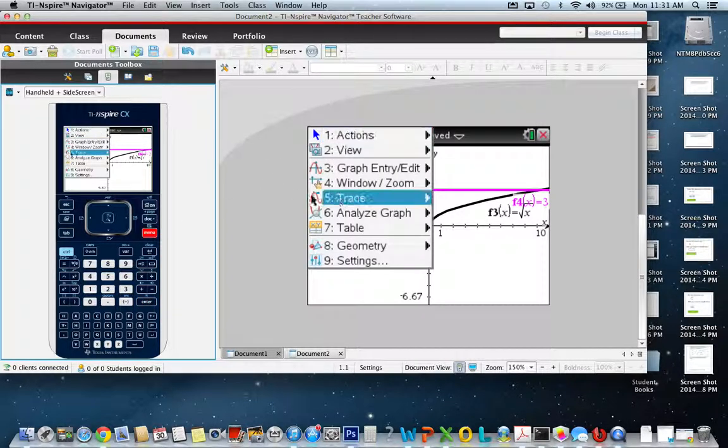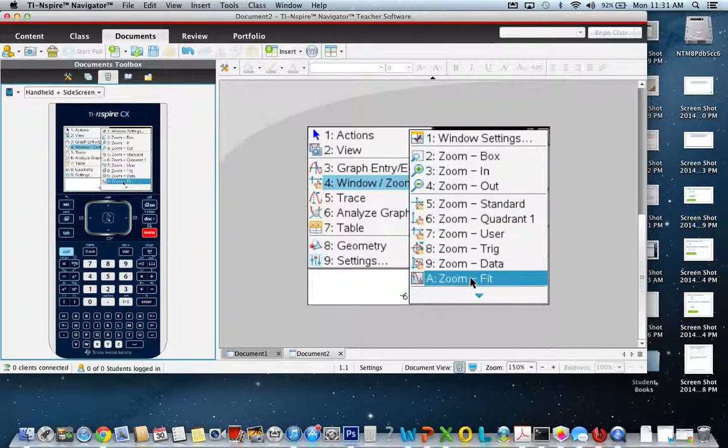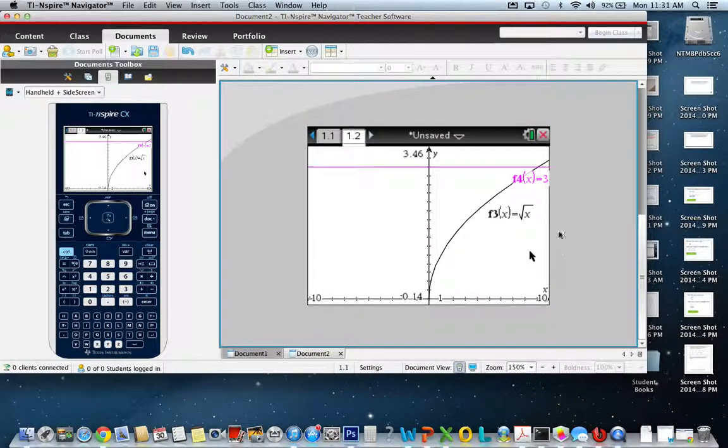Zoom menu, and you can zoom out, or zoom to fit. Zoom to fit is usually what I use, and you can see that they're intersecting at 9, it may even show that point if you zoom out more.